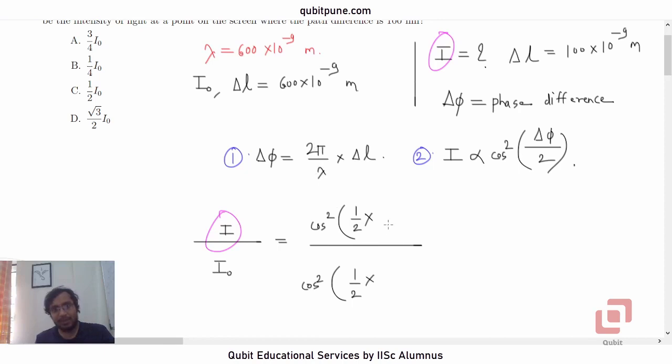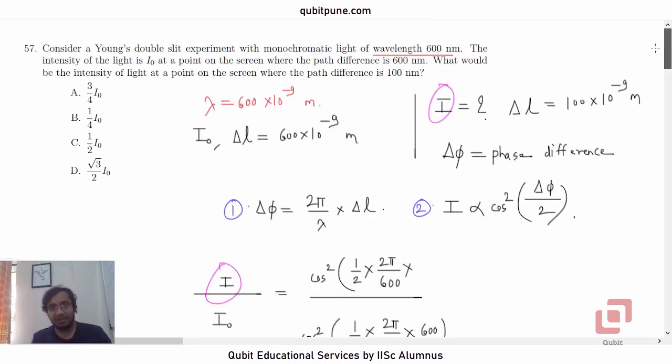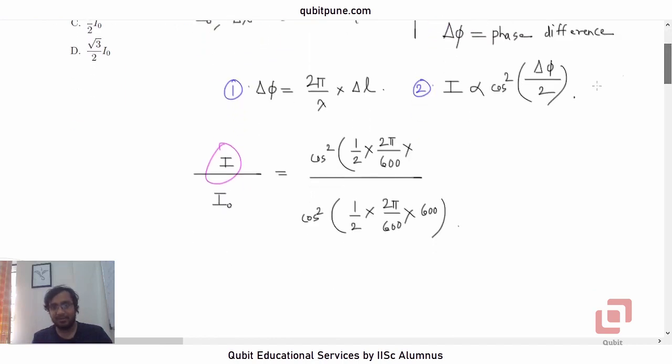Now even the 2 pi by lambda part is going to remain the same. Let me just say 2 pi by lambda into, let's go for I0. For I0 what is the path difference? It is 600 nanometers so let me write it as 600 here. And now for the required intensity what is the path difference? It is 100 nanometers, so let us write 100 here.